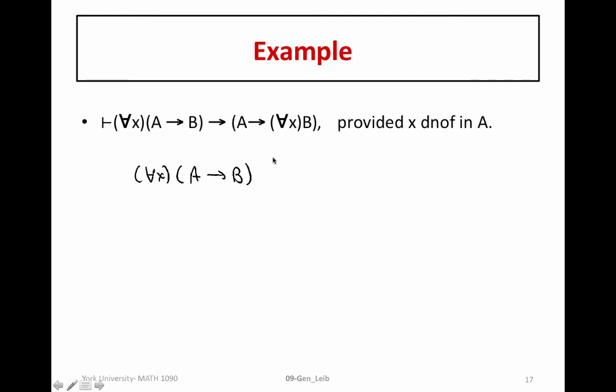Remember, we have an axiom that tells us we can distribute that quantifier throughout. So axiom AX3 tells us that for all X, A implies B implies for all X, A implies for all X, B. So this helps us to get somewhere, and now we need to know why we can drop this quantifier.